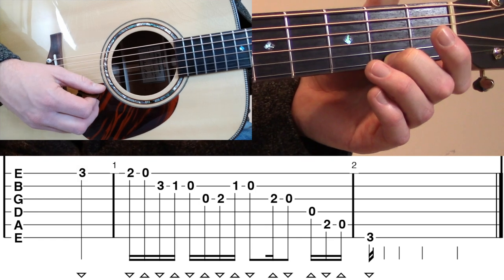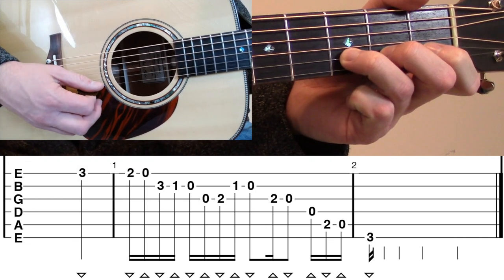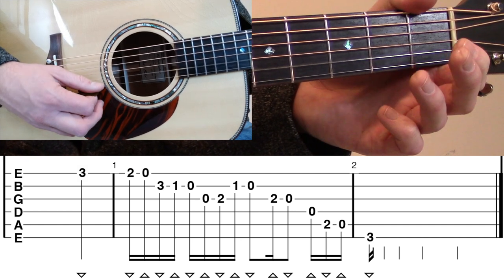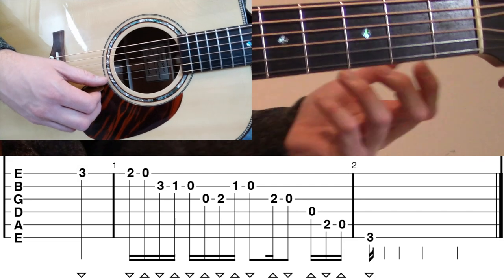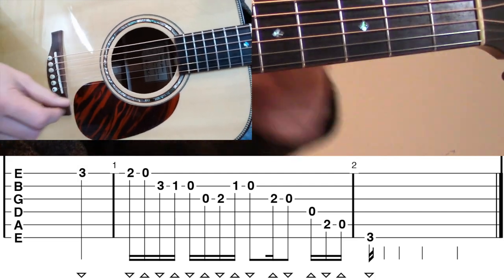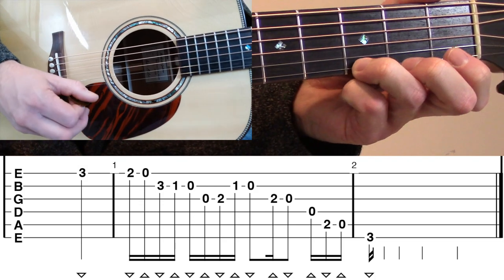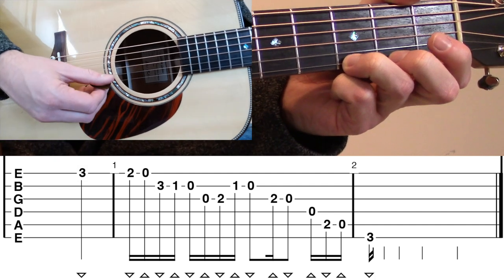We're going to go open high E on an upstroke, third fret B, first fret B to open B, and that third fret, that pickup note, that third fret high E, that's on a quarter note. So we're going to let that ring out for an entire quarter note before we actually start the line that begins in the beginning of measure number one.